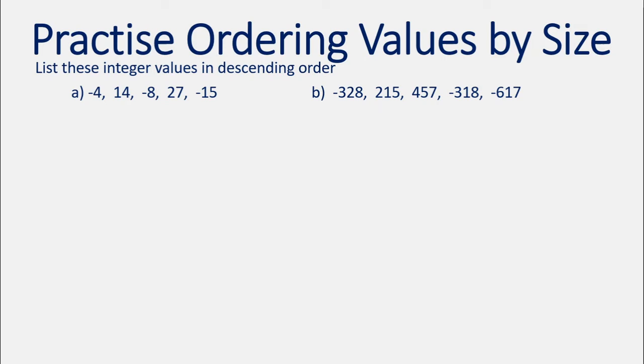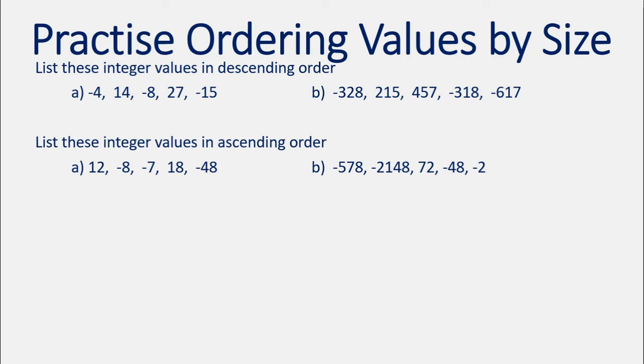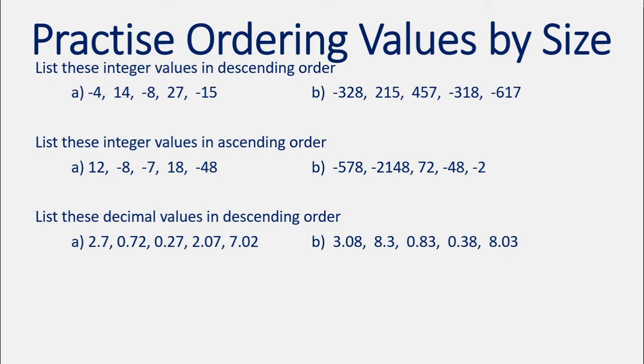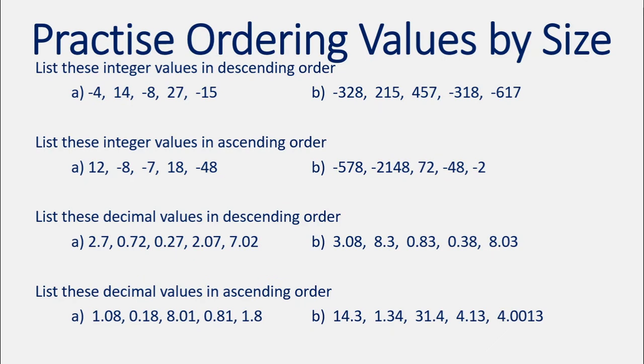Now it's your turn. Practice ordering values by size — you're going to want to write this down. First, list these integer values in descending order — remember, that means going from big to small. Next, list these integer values in ascending order — always read the instructions carefully, ascending means from smallest to biggest. Next, list these decimal values in descending order, biggest to smallest. And finally, list these decimal values in ascending order, smallest to biggest. Hit pause, copy the questions down including the instructions so it's very clear whether you're doing descending or ascending. Work out your answers and hit play when you're ready to see them.